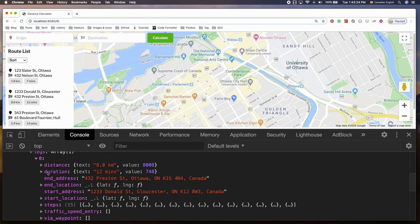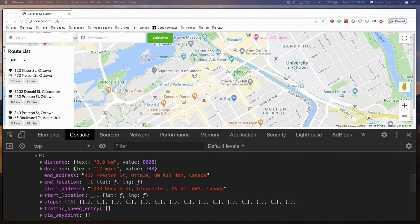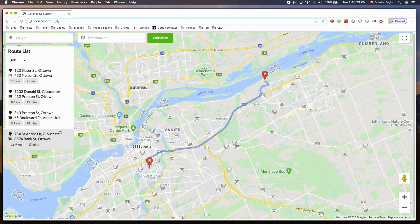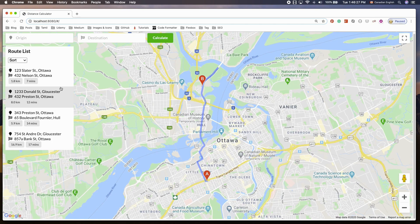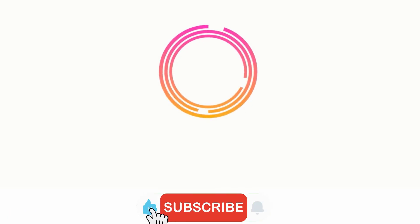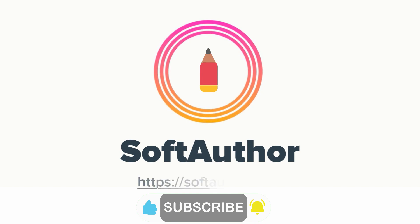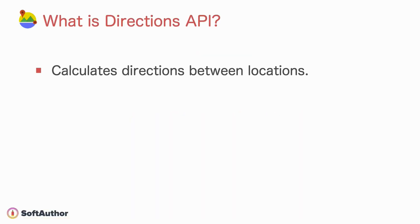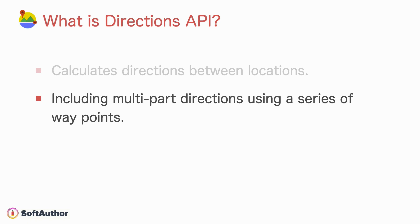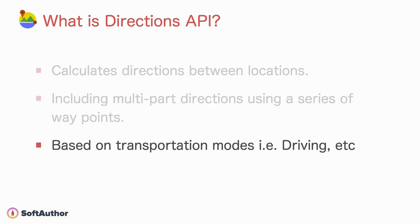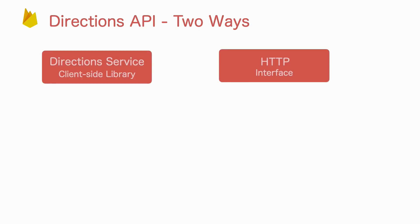I'm going to show you how to send a request to the Directions Service to get directions data, then render the result as a polyline drawing on the map. The Directions API is a web service that calculates directions between locations, providing the path from origin to destination including multi-part directions using waypoints, based on various transportation modes such as driving, walking, and so on.